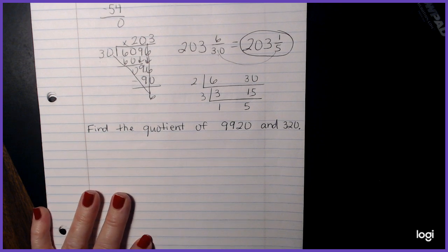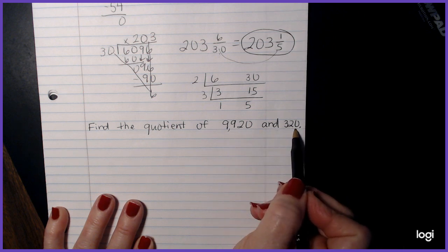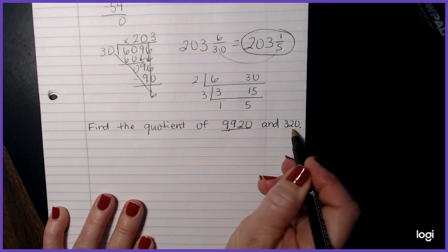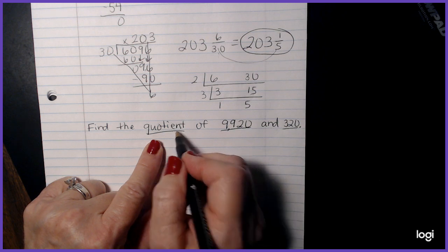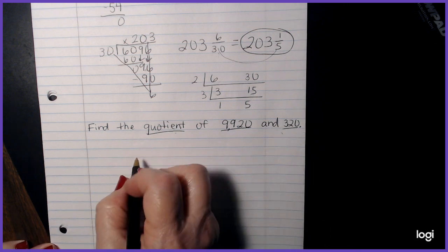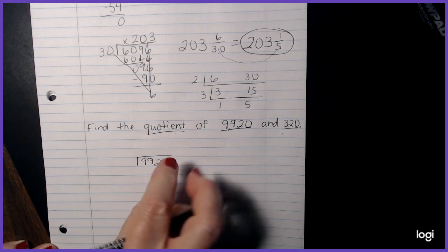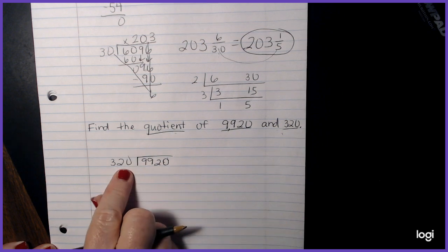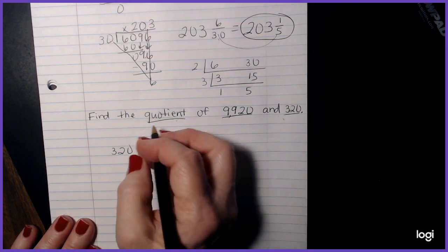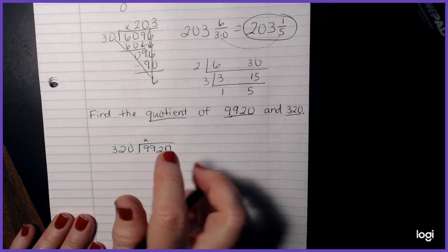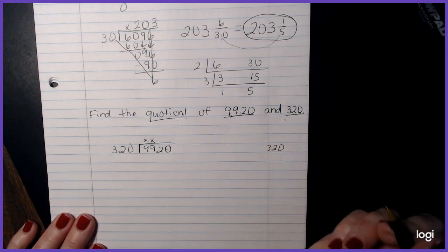So if you notice, I kind of tried to write a sentence here and it says find a quotient of 9,920 and 320. So I have two numbers here. I have the word quotient. Quotient, remember, means the answer to my division problem. So that means I have to divide these two. So that means I would make my division problem like this. It says of 9,920 and 320. So we're going to find the answer for a division problem. Obviously, as we're writing this out, we can see that definitely 320 cannot go into nine. It can also not go into 99.